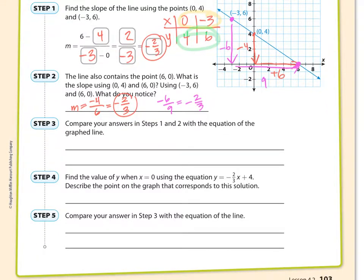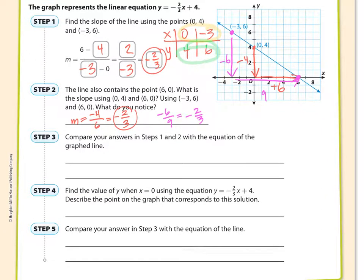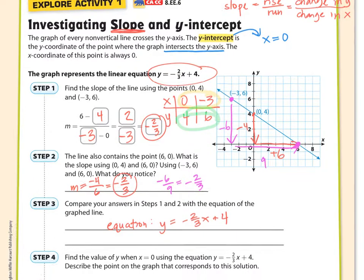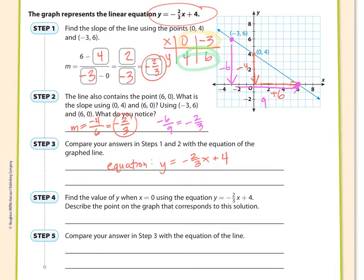Compare answers in step 1 and 2 with the equation of the graph line. The equation is right here. y equals -2/3 x plus 4. So in step number 1 and step number 2, we got -2/3. Well, -2/3 is right there, -2/3. So the slope shows up in the equation. That's going to be important for us as we continue to move forward.